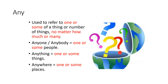The third indefinite pronoun is 'any'. It is used to refer to one or some of a thing or number of things, no matter how much or how many. 'Anyone', 'anybody' — one or some people. 'Anything' — one or some things. 'Anywhere' — one or some places.